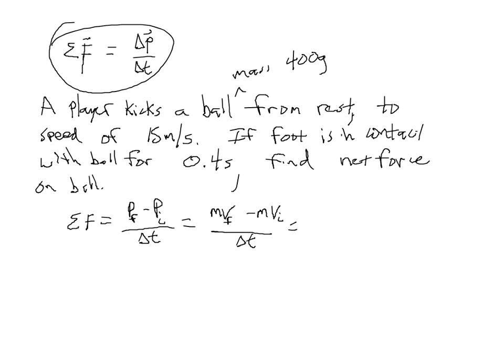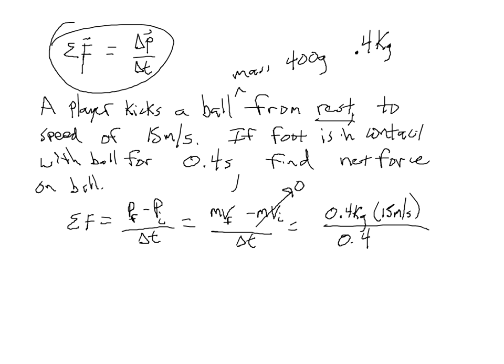The initial momentum of the ball is zero because it started from rest. So the net force equals the mass of the ball — 400 grams, which is 0.4 kilograms — times the final velocity of 15 meters per second, all divided by the time of 0.4 seconds.